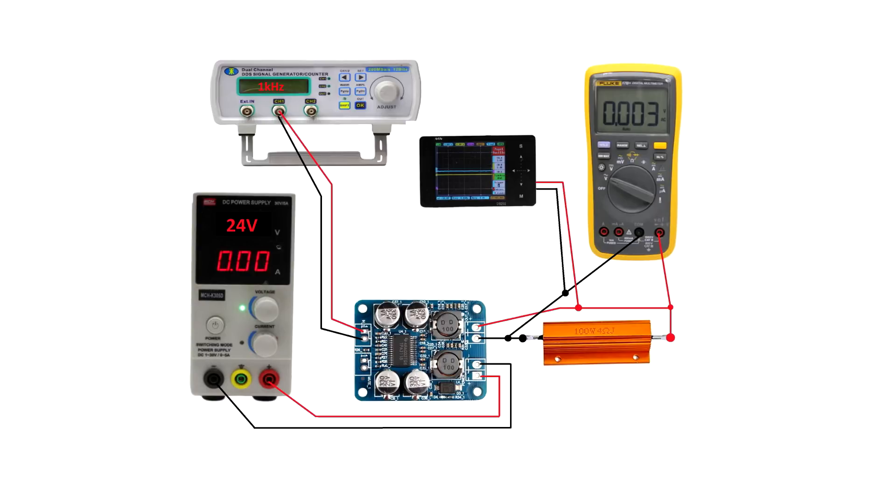Now about the experiment itself. To the output of the amplifier will be connected a load of 4 ohms. A multimeter will be connected to the load in the AC voltage measurement mode, since at the amplifier output, the signal will be of sinusoidal form.